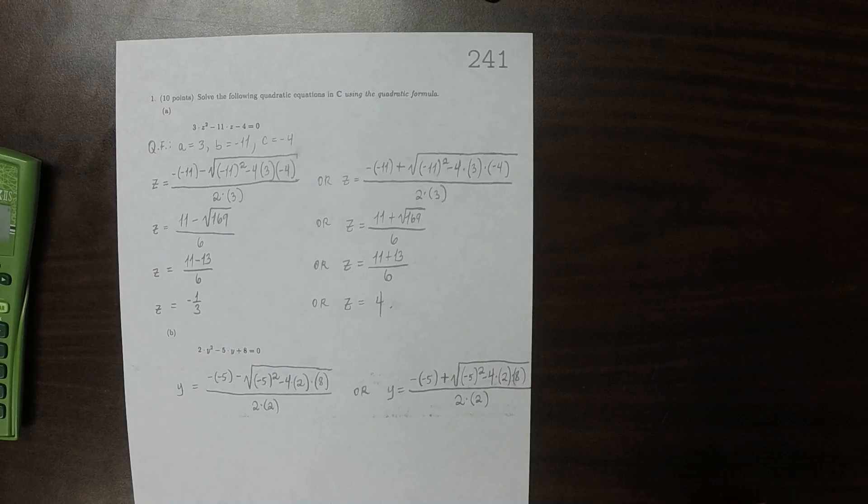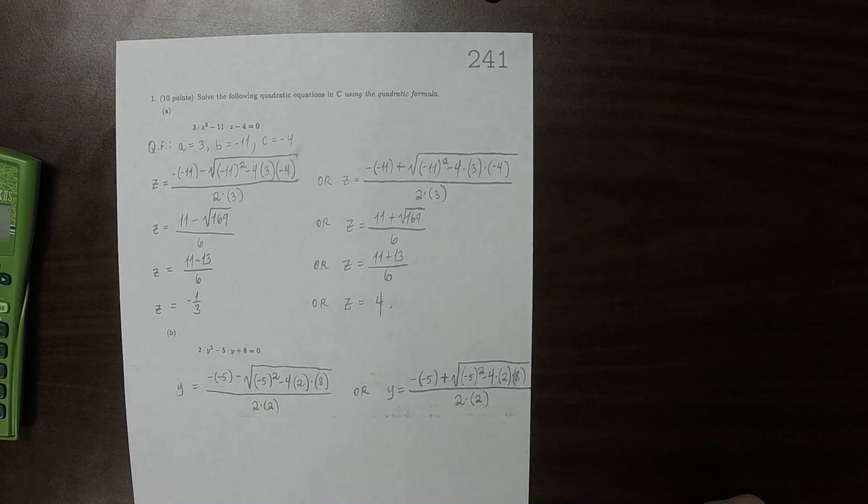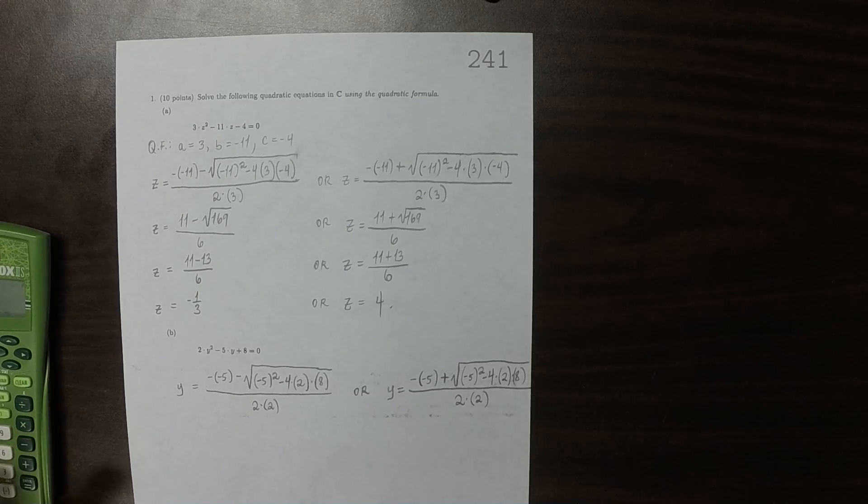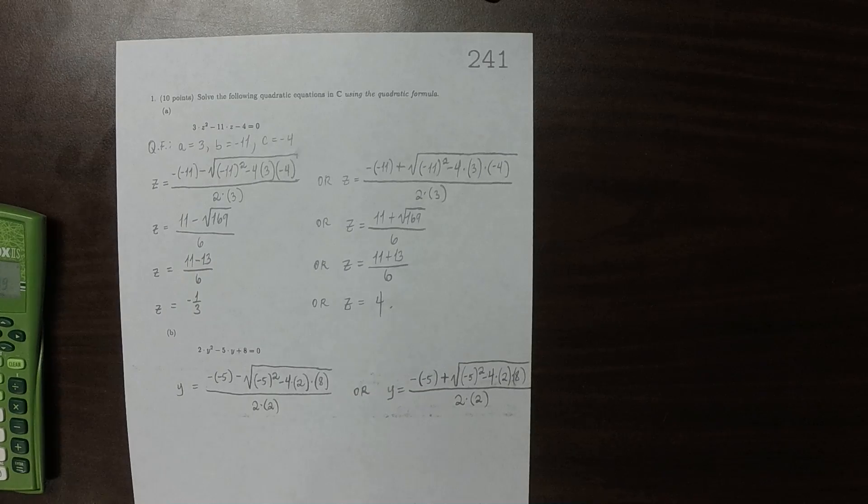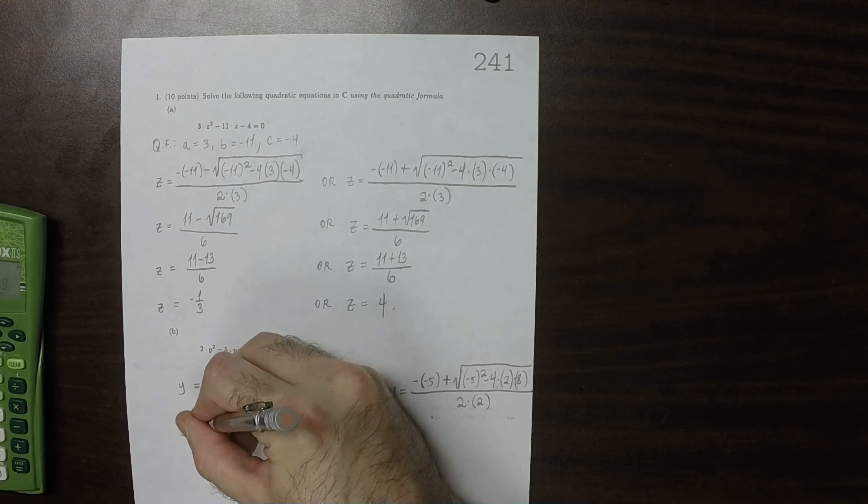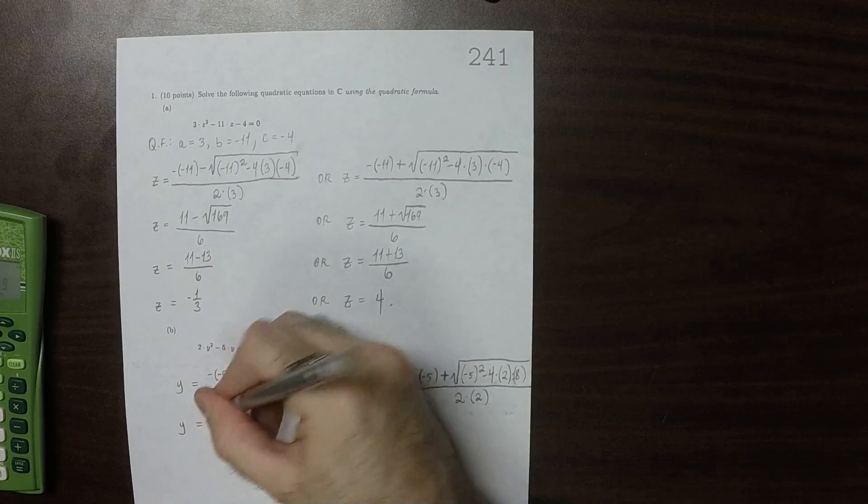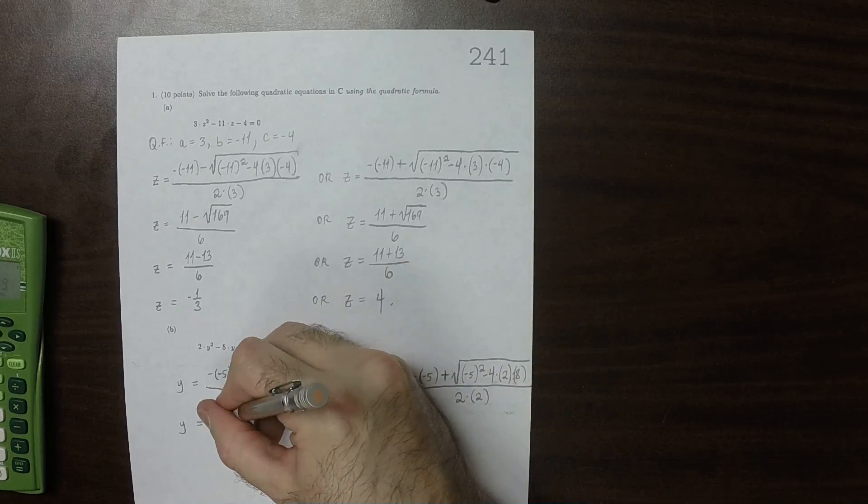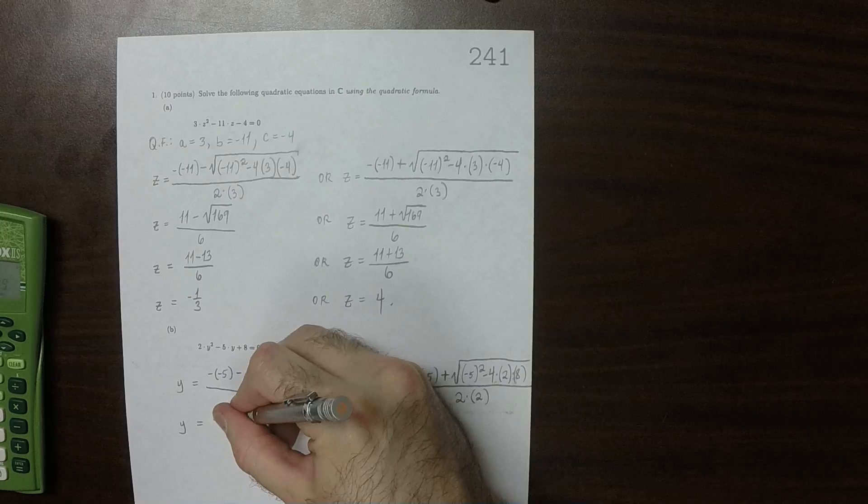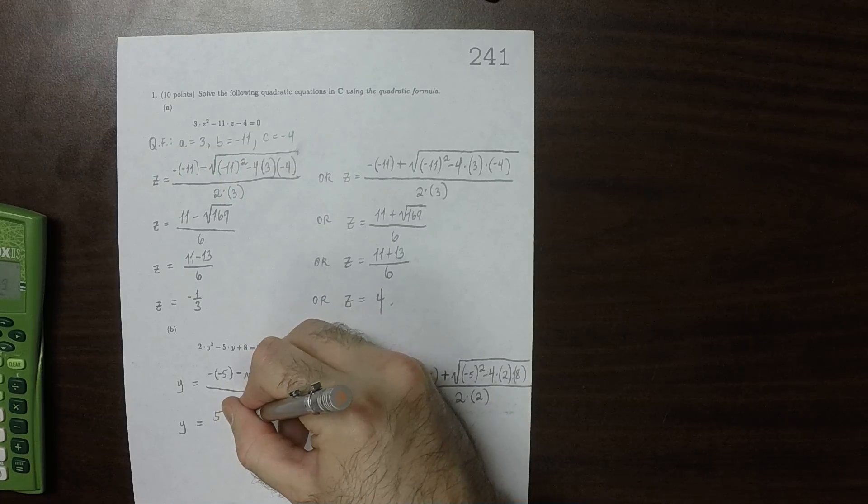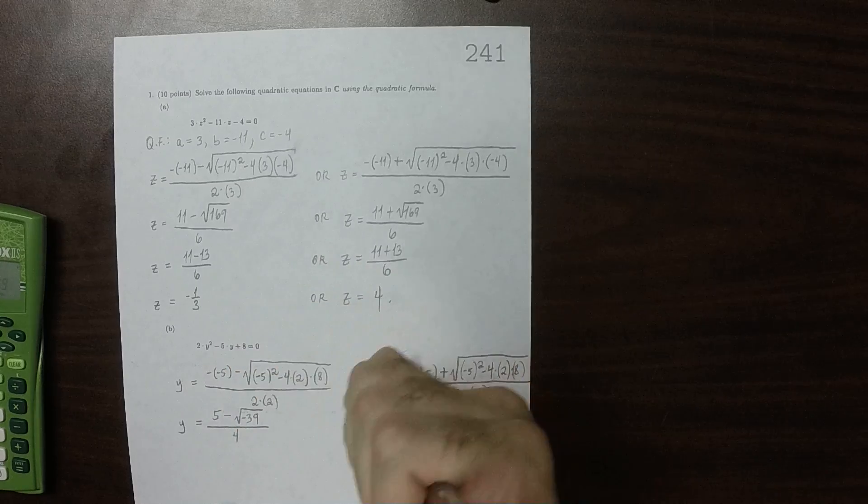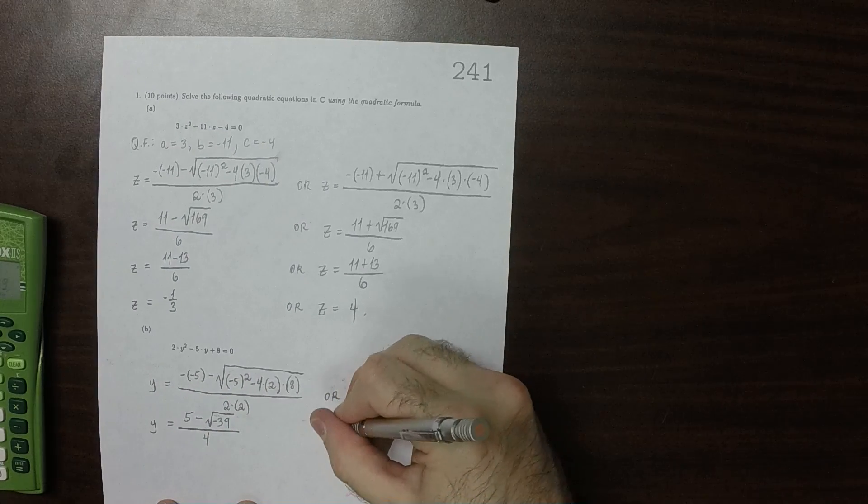So the discriminant, that'd be 25 minus 64, negative 39. So this would be y is 5 minus the square root of negative 39 over 4.